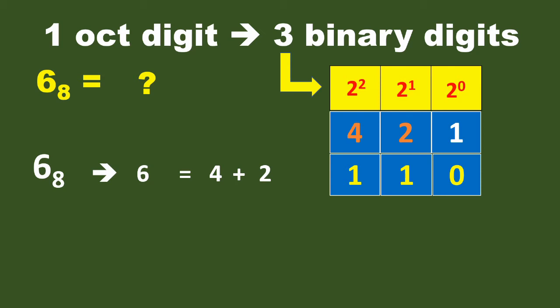So the values — on or off — are 1, 1, 0. This is now the equivalent number in binary for the octal value 6.